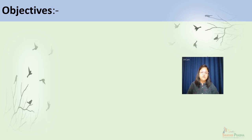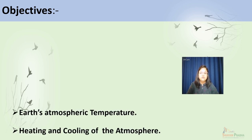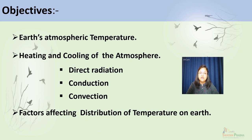The main learning objective of this particular lecture is to understand Earth's atmospheric temperature, heating and cooling of the atmosphere, which mainly happens through three processes: through direct radiation, conduction and convection, and finally to understand the factors which affect or control the distribution of temperature on earth.